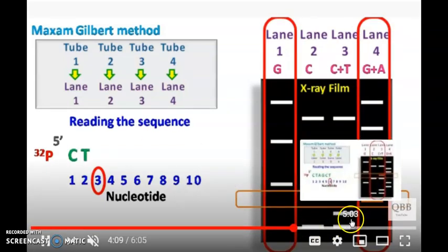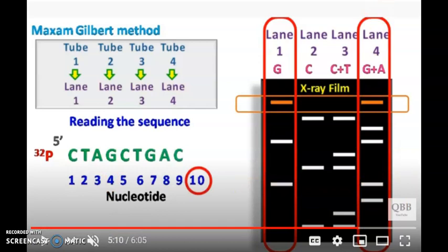This is how you continue. Lane 4 has the next nucleotide. In this way, you can find out all the nucleotides that are present.